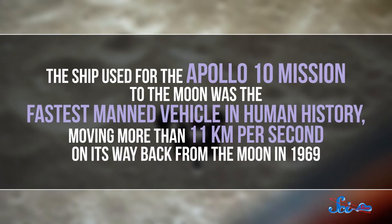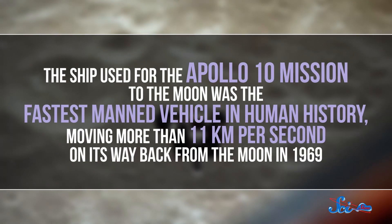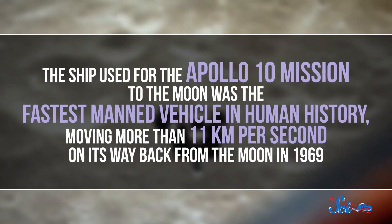The ship we used for the Apollo 10 mission to the moon was the fastest manned vehicle in human history, moving more than 11 kilometers every second on its way back from the moon in 1969. If you were going as fast as Apollo 10 at its fastest, you would still take two and a half months to travel half of the 150 million kilometers between Earth and the sun.